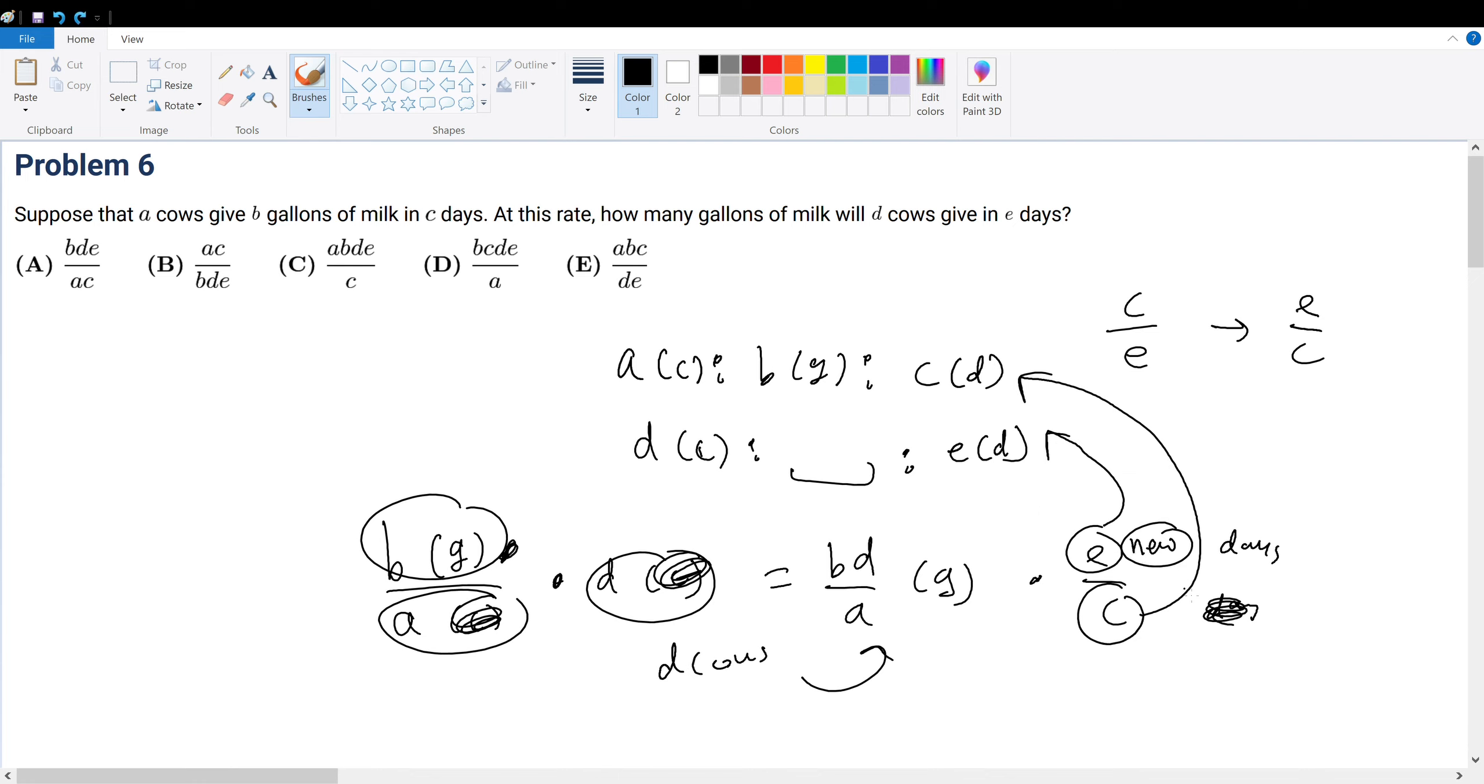And so this is our final answer: BDE over AC, which is answer choice A.